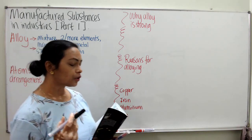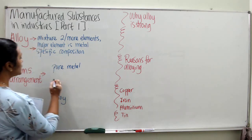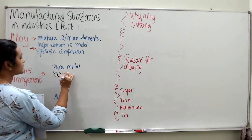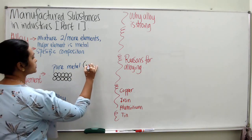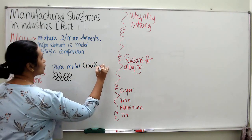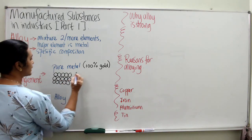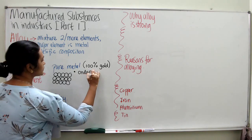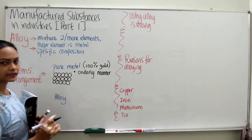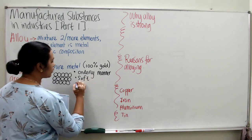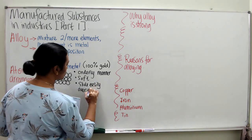We are concentrating our alloy mainly on metal. Metal is a solid, so that is the reason why metal atoms are drawn like this. What happens is because they are pure metal — for instance, just say teacher is concentrating on 100% pure gold — these are pure metal atoms which are arranged in a very orderly manner. So the first characteristic is orderly arrangement. You can see that even though I draw in freehand, it is very orderly. So they are soft. Why soft? Because they can slide easily over one another.